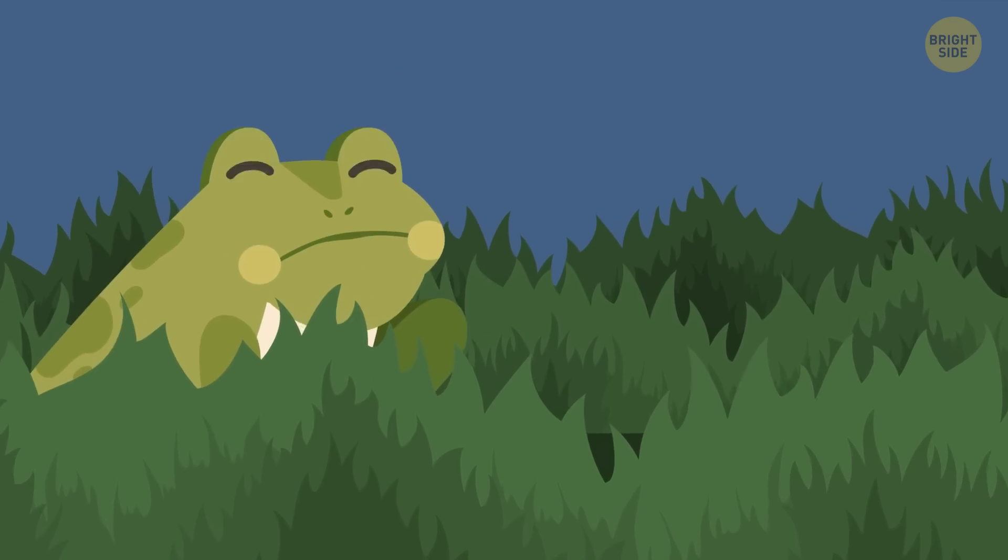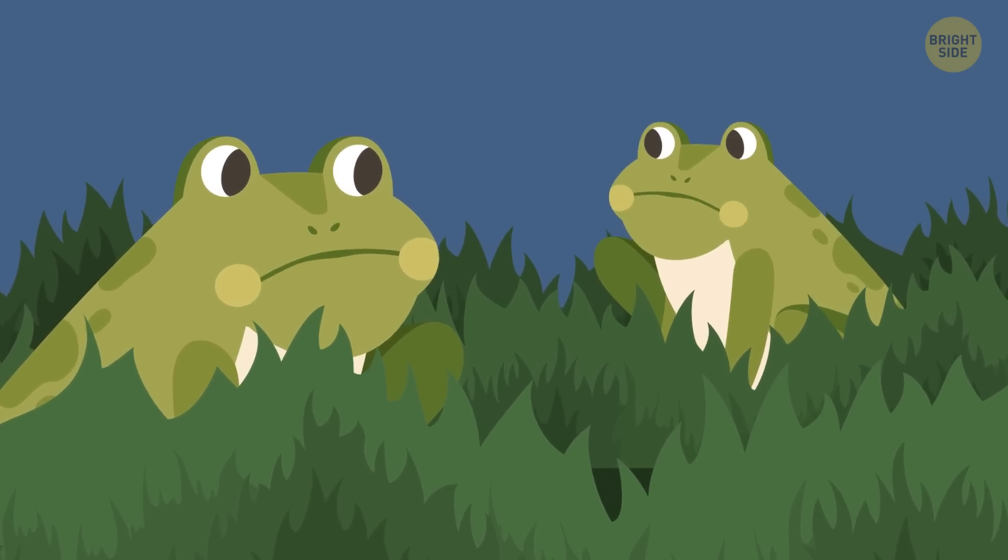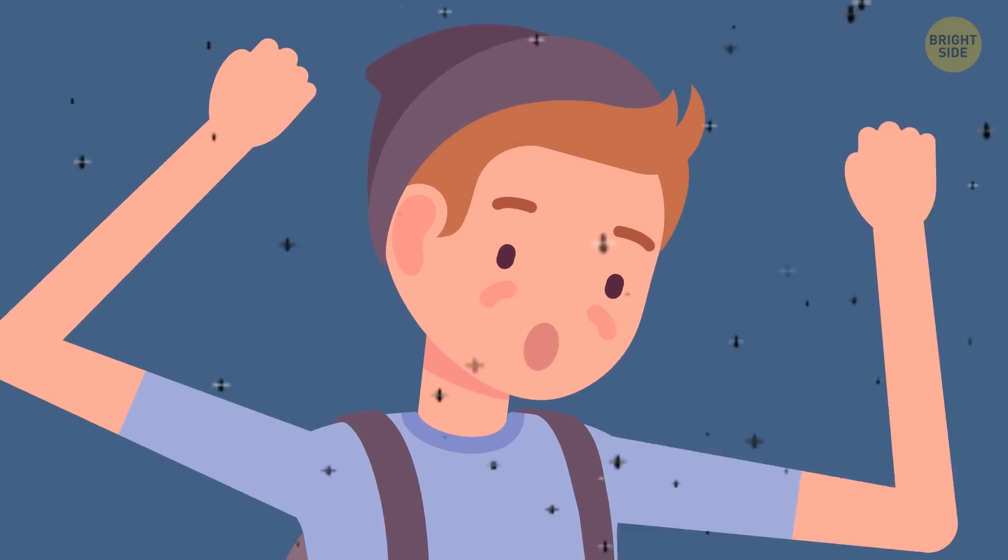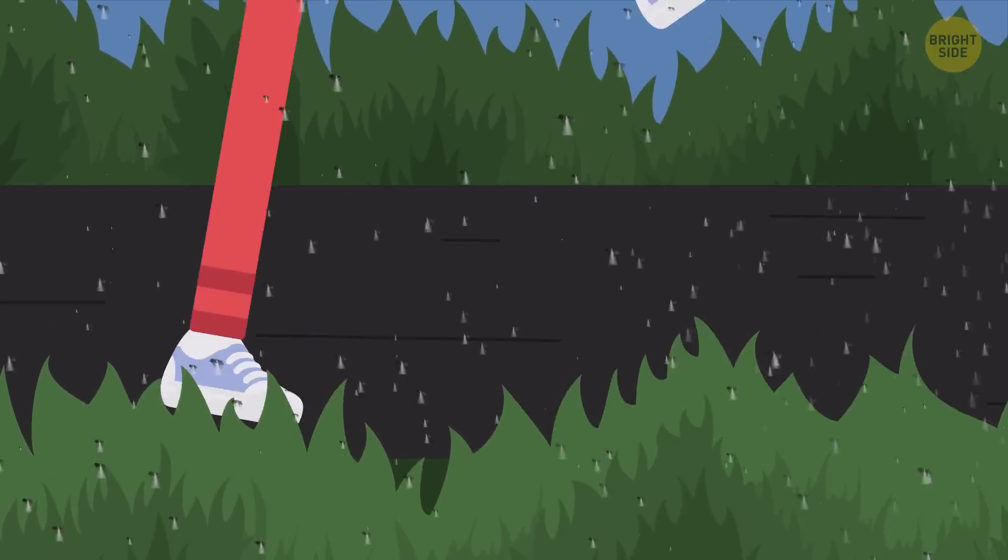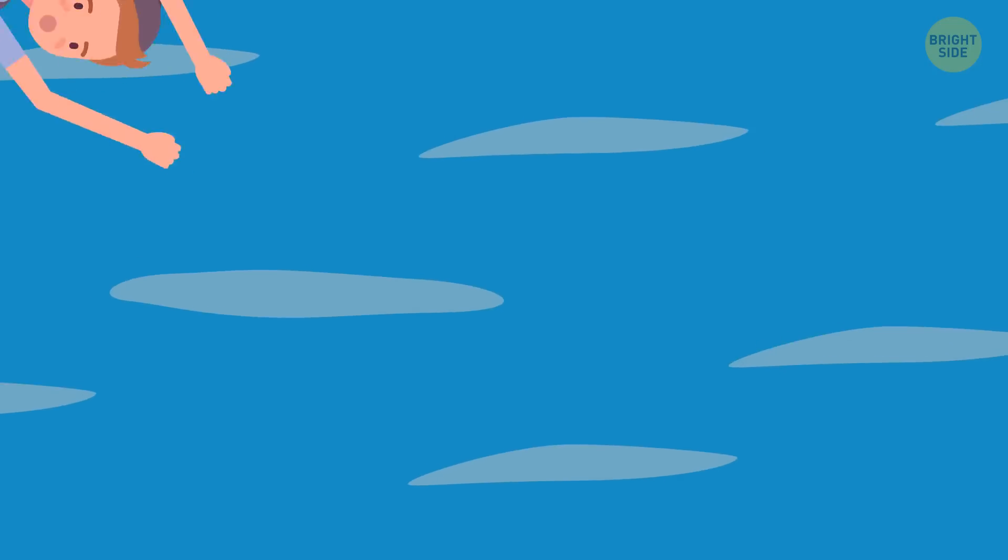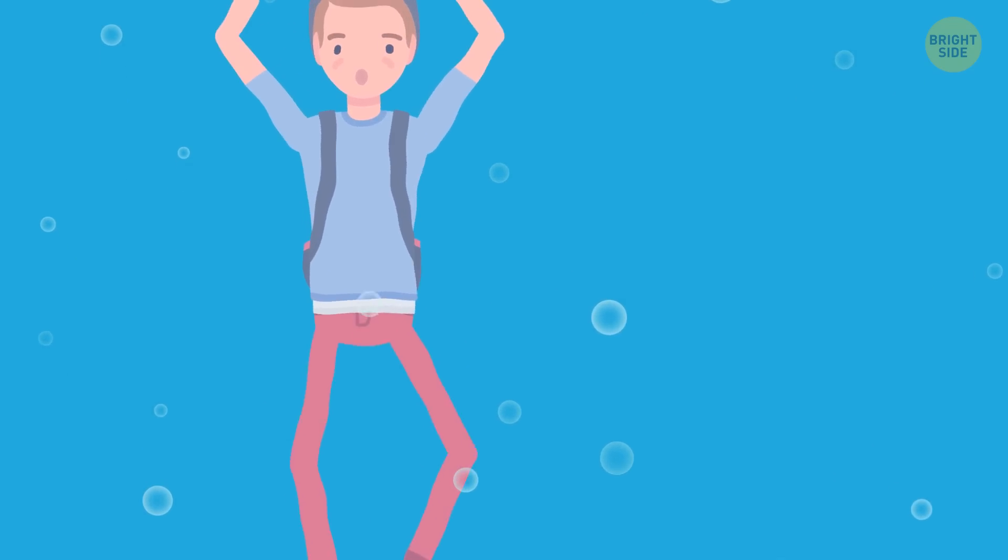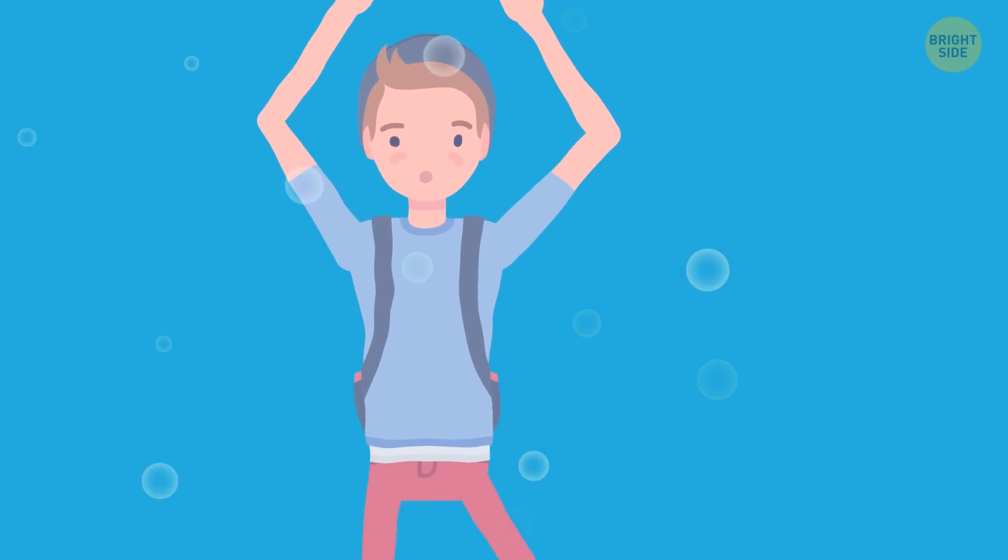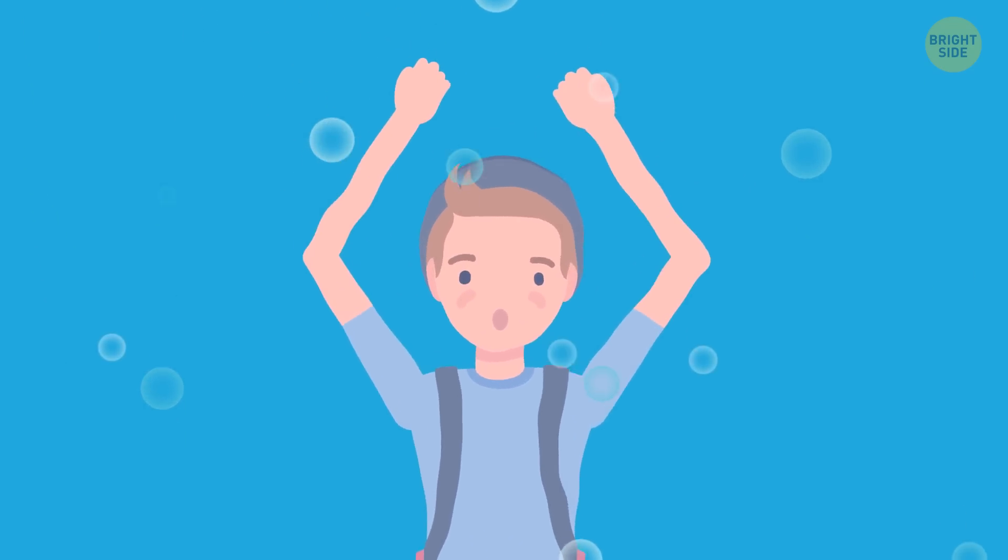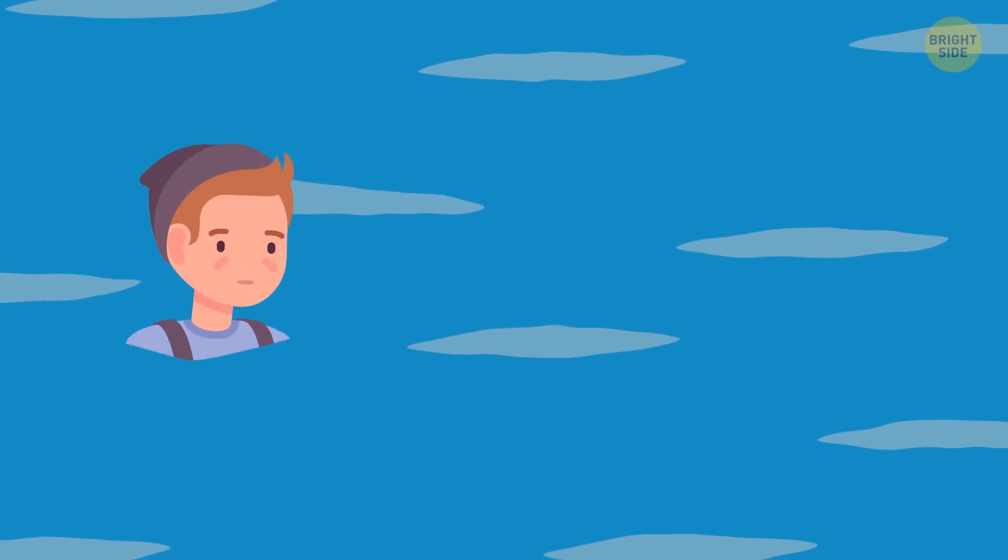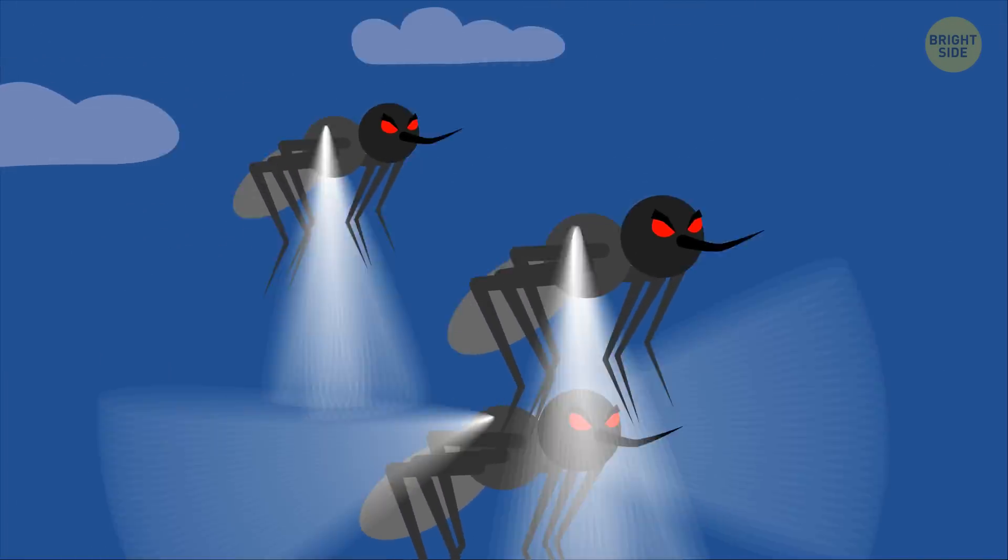A frog croaks nearby. And another one. Several dozen jumping animals are approaching the shore. They release their tongues like spears and catch mosquitoes. This gives Barry hope. He makes a last-ditch effort to reach the lake. He jumps in. Yeah! What a relief! Cold, fresh water envelops his whole body and relieves the itching and irritation from the bites. He waits in the water while the frogs dine on the mosquitoes. The remaining insects fly away.